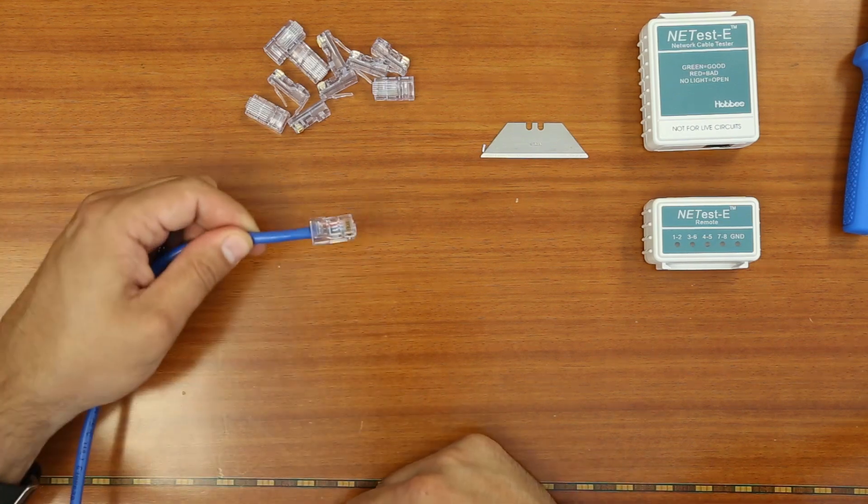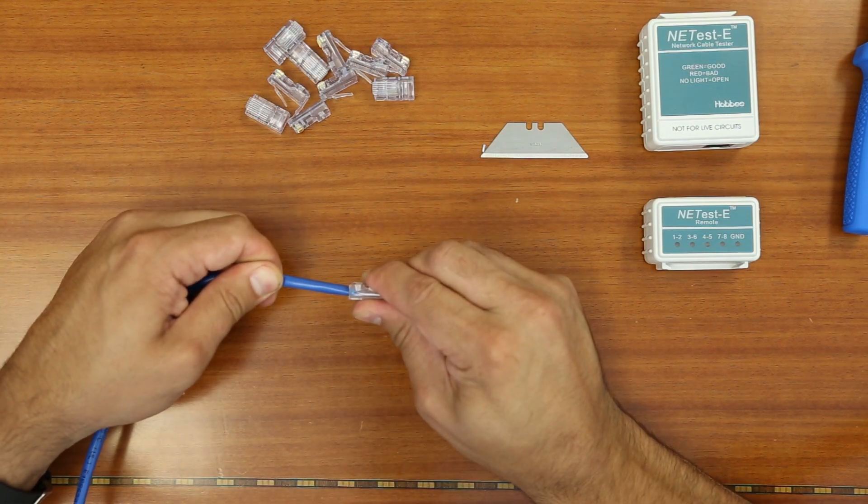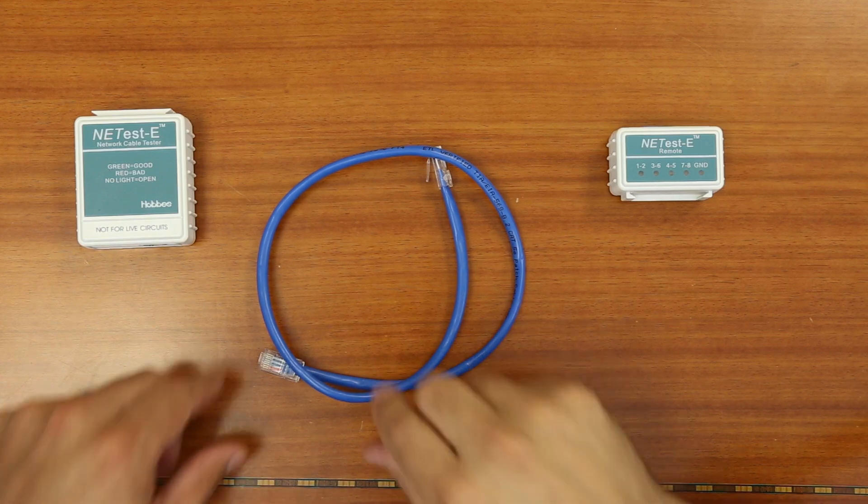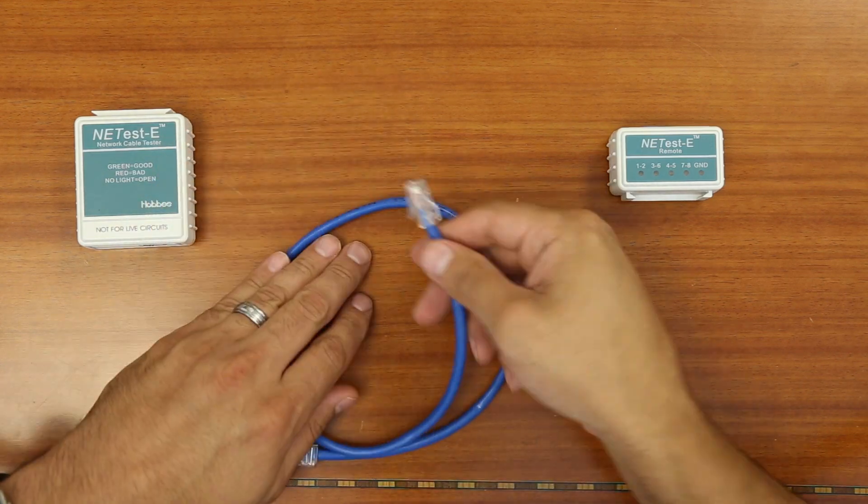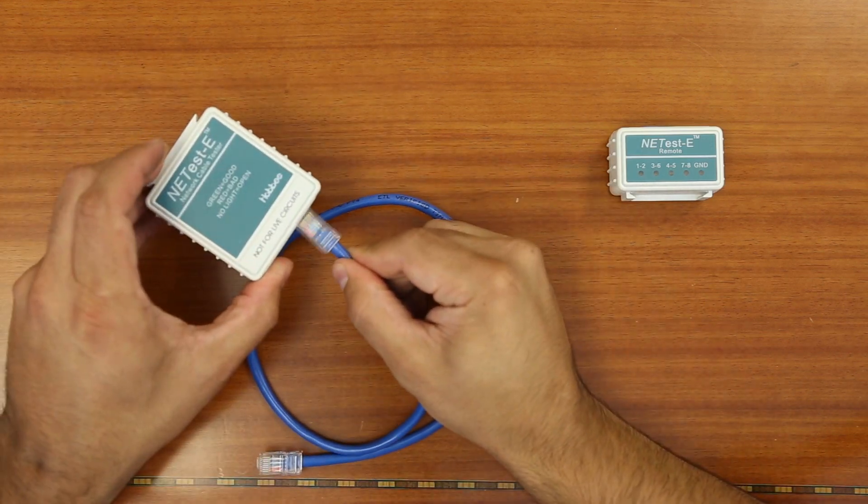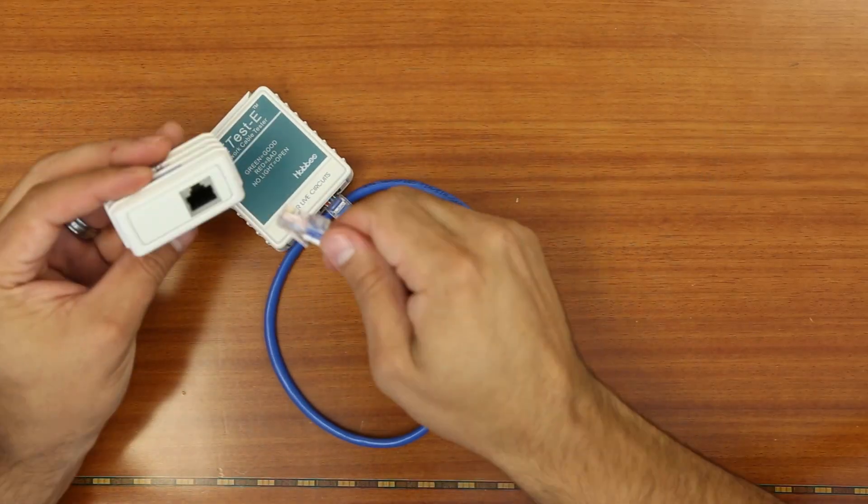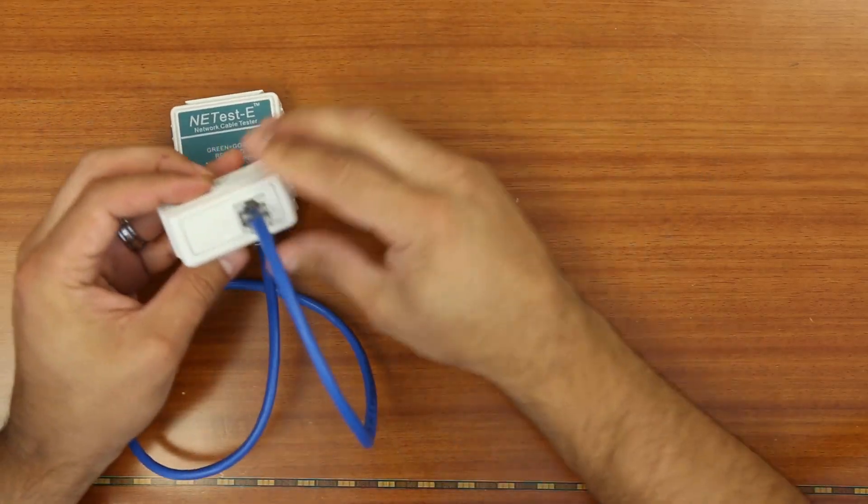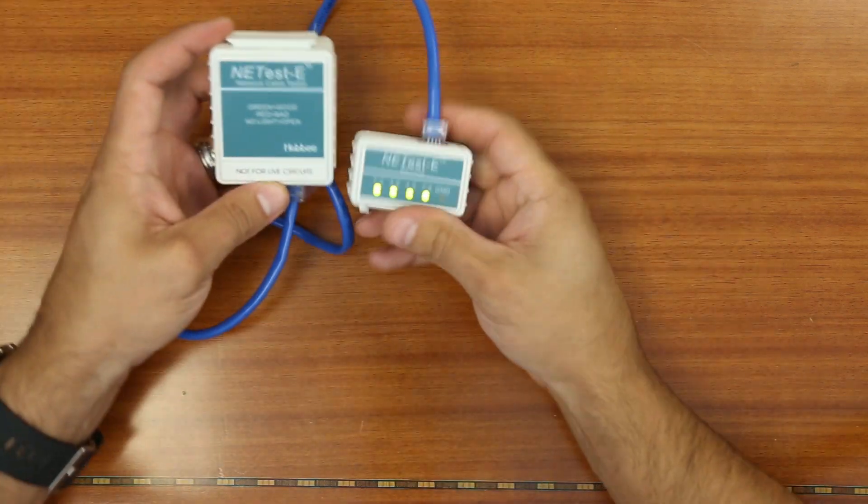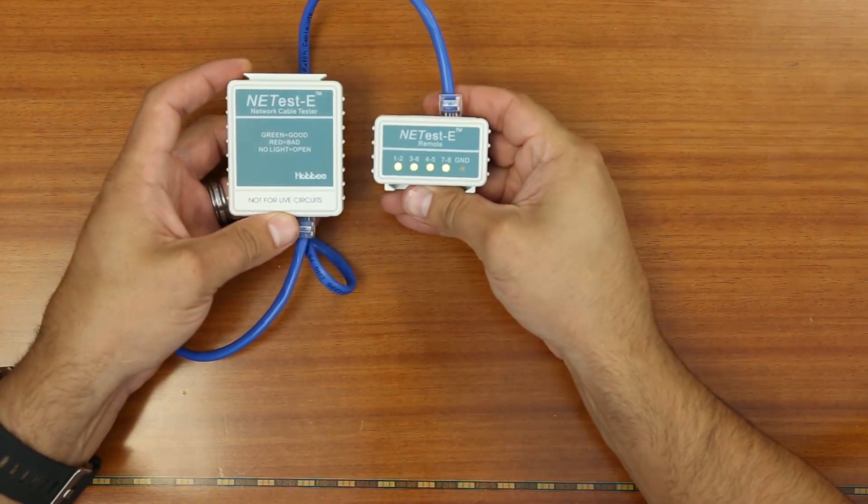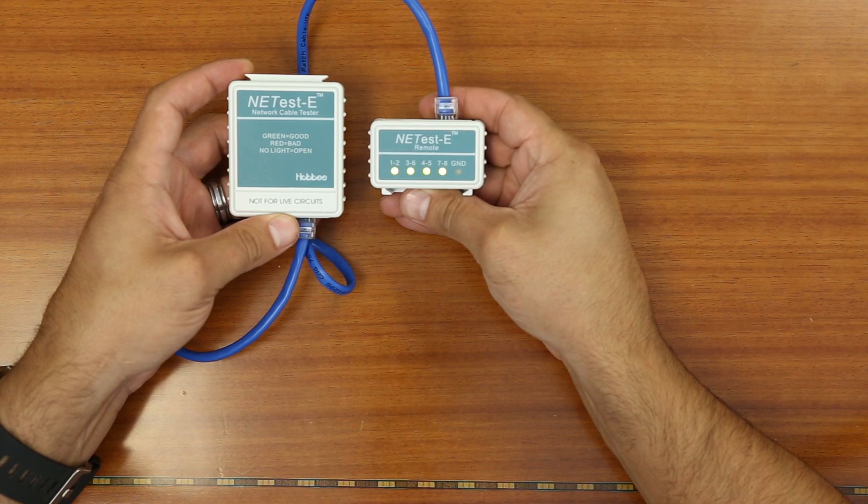The last thing to do in our five easy steps is to test the cable to make sure it's ready for use. Cable Wholesale offers many different styles of testers, but for our purposes, we are going to utilize a simple continuity tester. This test will ensure that the signal is carried all the way through the cable. It looks like a job well done. All of the pairs are properly seated within the contacts.